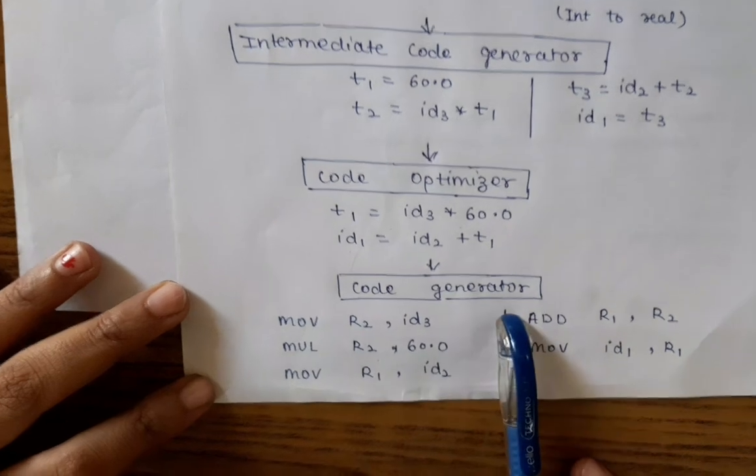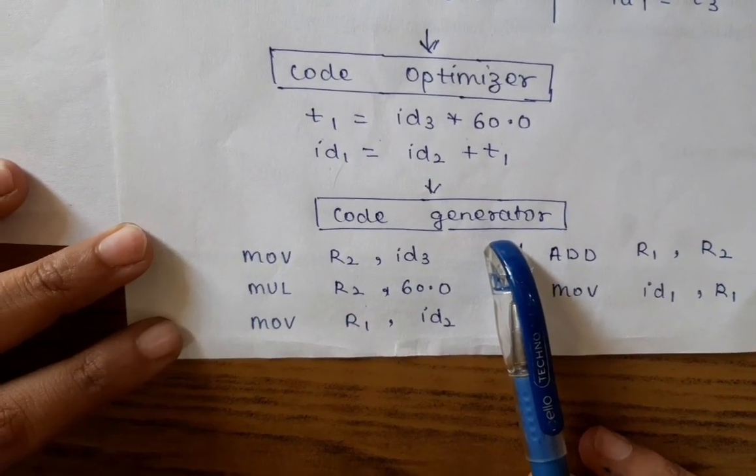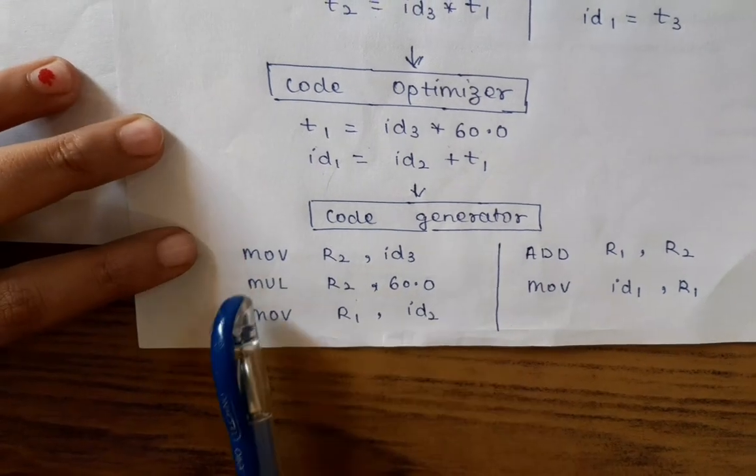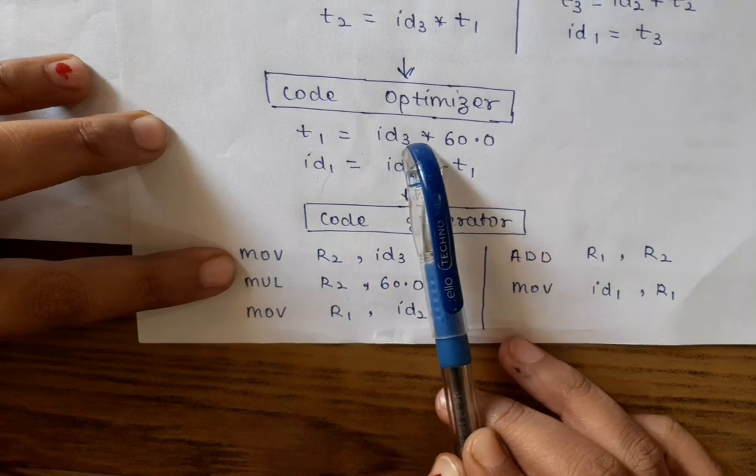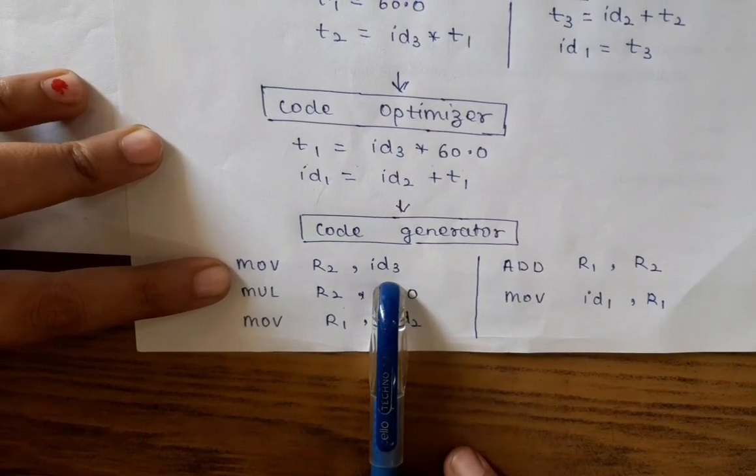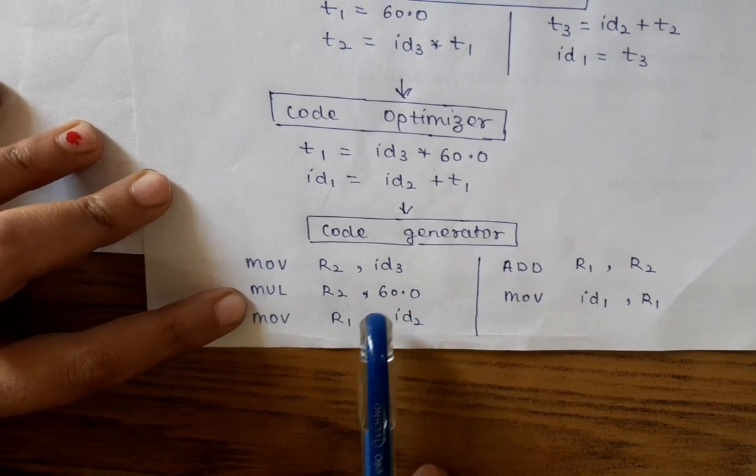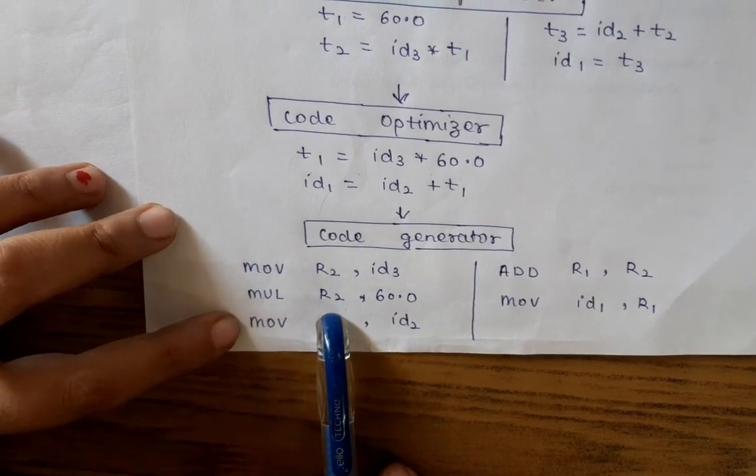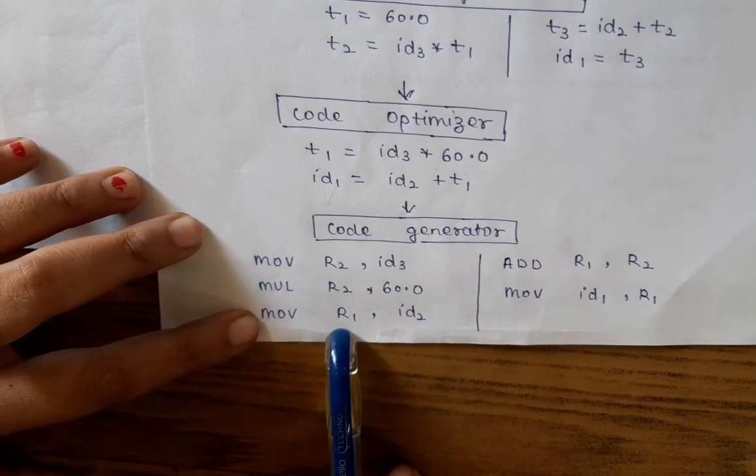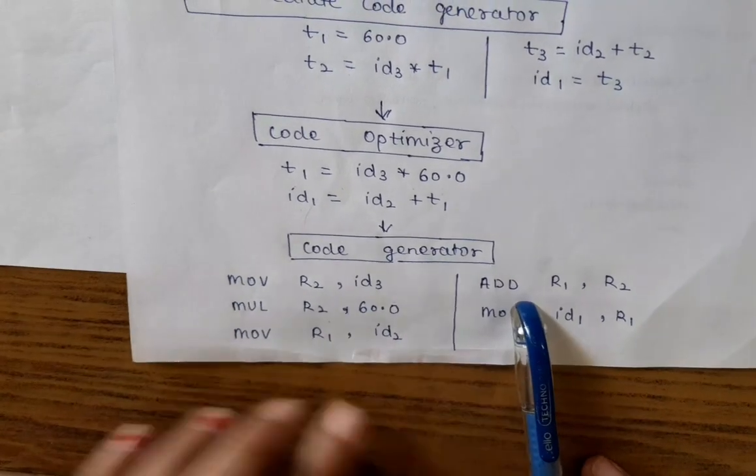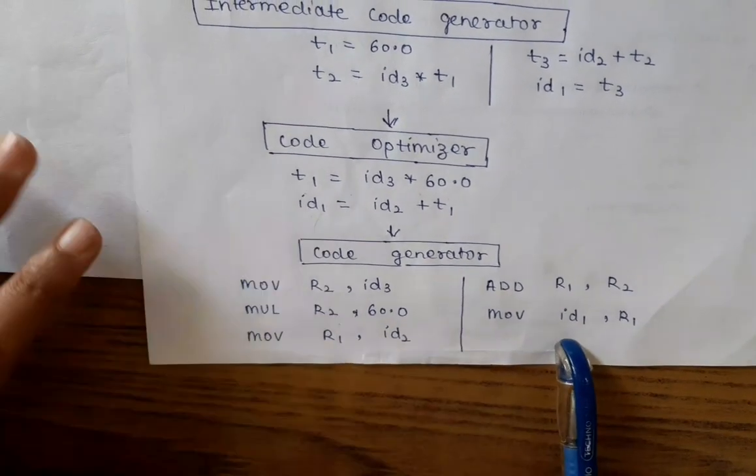Our last phase is code generator. Code generator generates the code to the target language. Here we write assembly codes. Move, first of all, identifier 3. Then move identifier 3 into R2. Multiply it by 60 into R2. Multiply 60 into R2. Then move identifier 2 into R1. Add these R1 and R2. And at the last, move R1 into identifier 1.